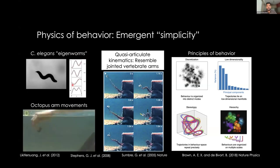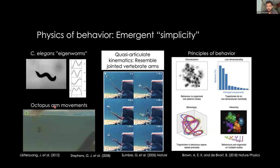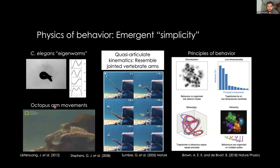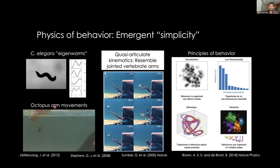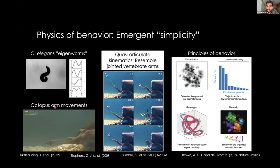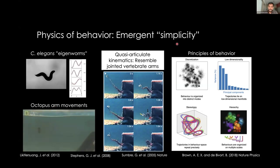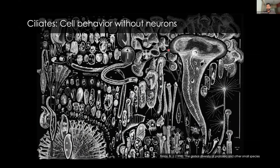Even in much more complex organisms like the octopus, the behavior of the arm is actually surprisingly low dimensional. The octopus arm has on the order of 10^7 neurons and 10^6 muscle fibers and essentially has an infinite number of degrees of freedom. But when the octopus reaches out and grabs its food, it does so in a way that's very similar to how we would reach out. There are joints that propagate along the arm, and the overall kinematics is surprisingly low dimensional. That kind of sets the stage for the flavor of what you're going to see today.